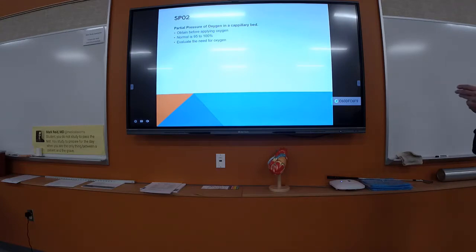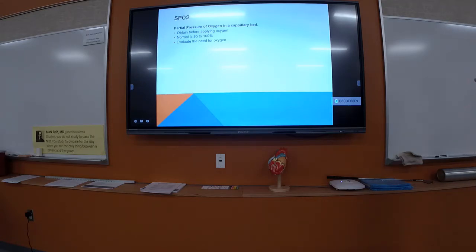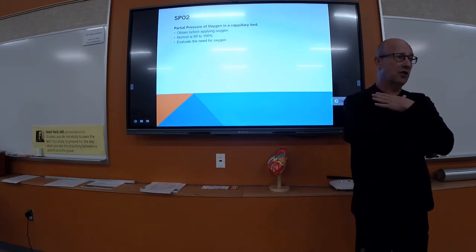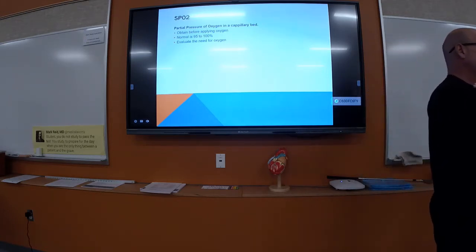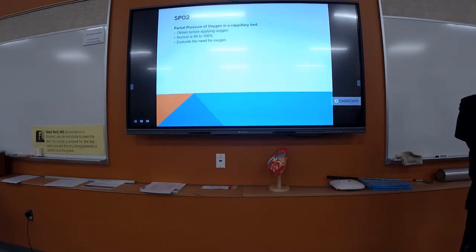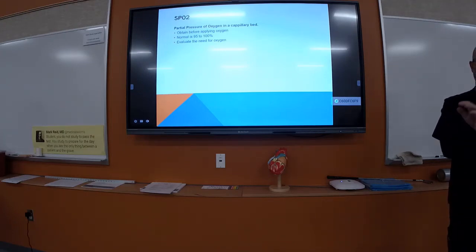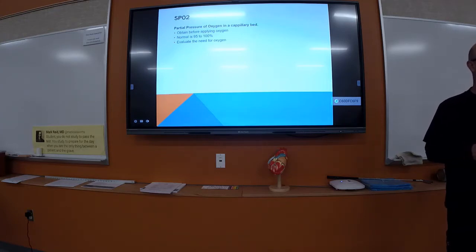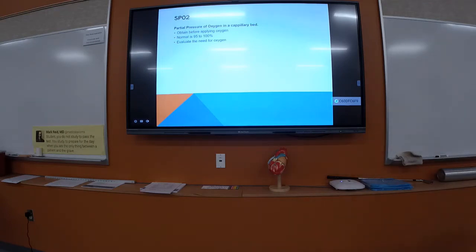If the patient has an SpO2 below 94 percent and has outward respiratory distress or complains of shortness of breath, we would apply oxygen. Even in a heart attack, stroke, or trauma, oxygen can still have a negative effect at the cellular level if the patient doesn't need it. So we evaluate the need for oxygen and get a room air SpO2.